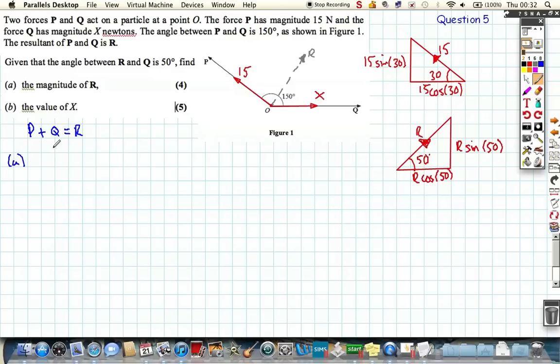So looking at part A, if we resolve in the vertical direction, we're not going to have anything to do with Q, which is good because this is an unknown force. So if we resolve vertically, remembering that P plus Q must be equal to R, we're going to get that the vertical component of P is 15 sine 30. 15 sine 30 must be the same as the vertical component of R acting up here, which is R sine 50.